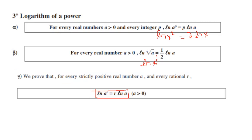The logarithm of a power: ln(aᵖ) = p·ln(a). For example, ln(x²) = 2·ln(x) — the power comes down in front of ln. Also, ln(√a) = ½·ln(a), because √a = a^(1/2), so the exponent ½ comes to the front: ½·ln(a). In general, ln(aʳ) = r·ln(a).